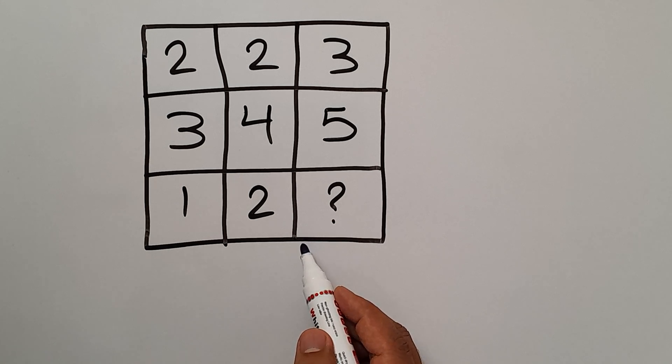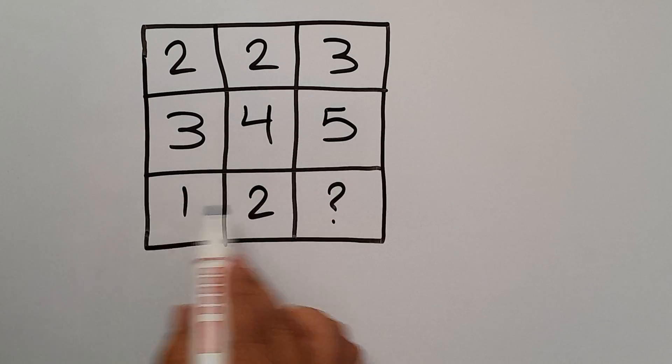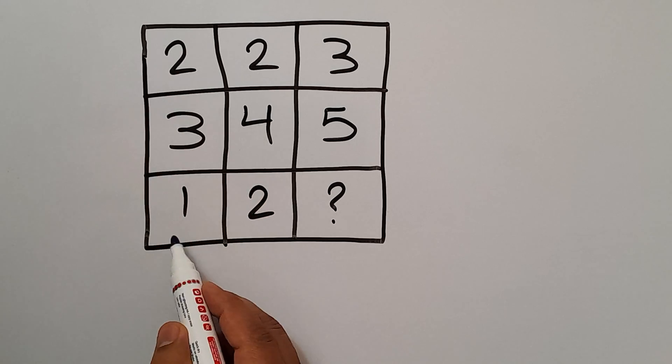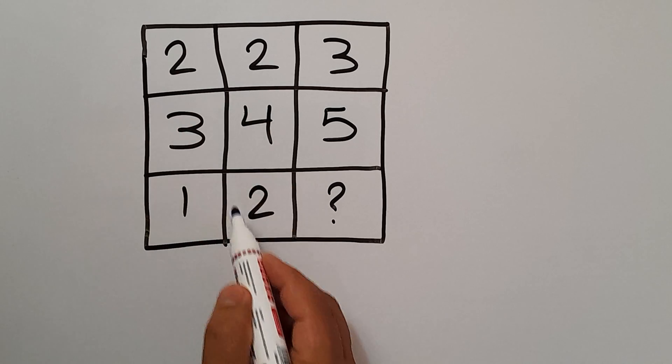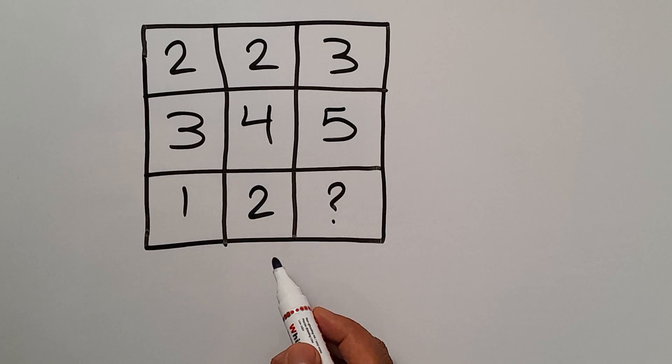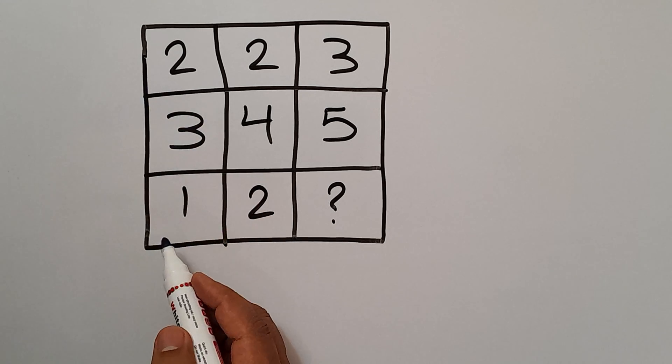Are you ready to solve? Let's go. To get started, instead of rows we need to focus on columns. In each column we have three numbers and we need to find the relationship between these three numbers.